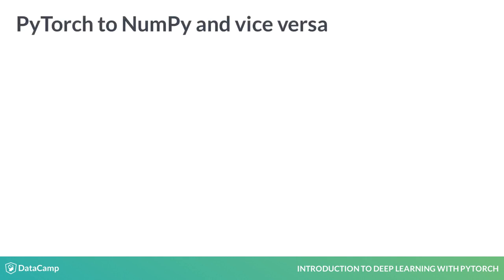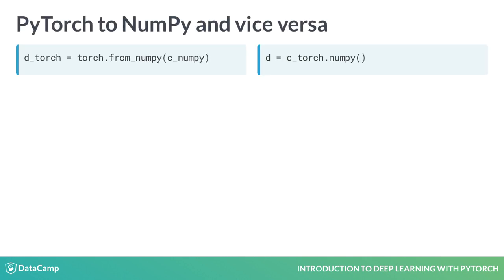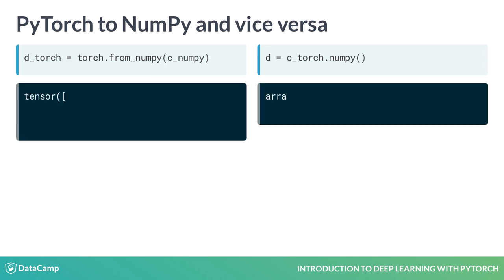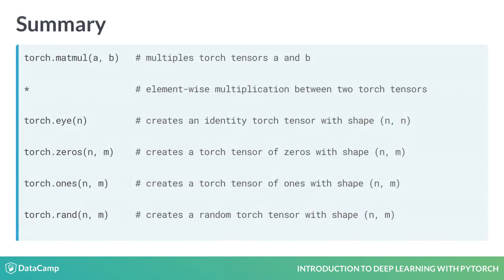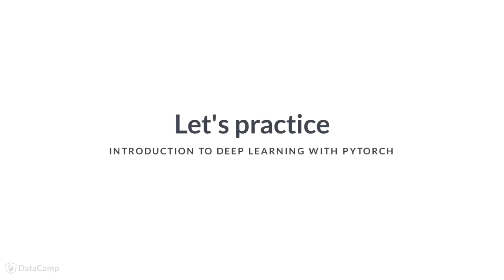It is easy to convert NumPy arrays to Torch tensors via the from_numpy function. Similarly, you can convert Torch tensors to NumPy arrays via the numpy function. We have prepared a summary of matrix operations, so don't hesitate to get back to it if you forgot the names of the functions. Let us practice with the concepts we just learned.